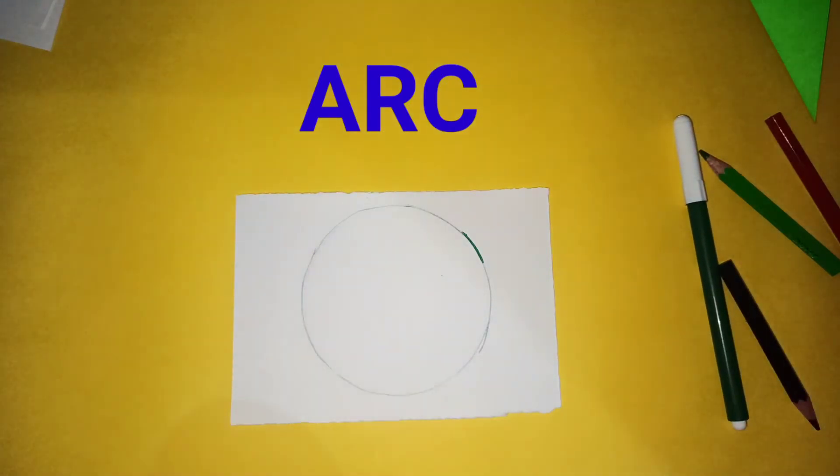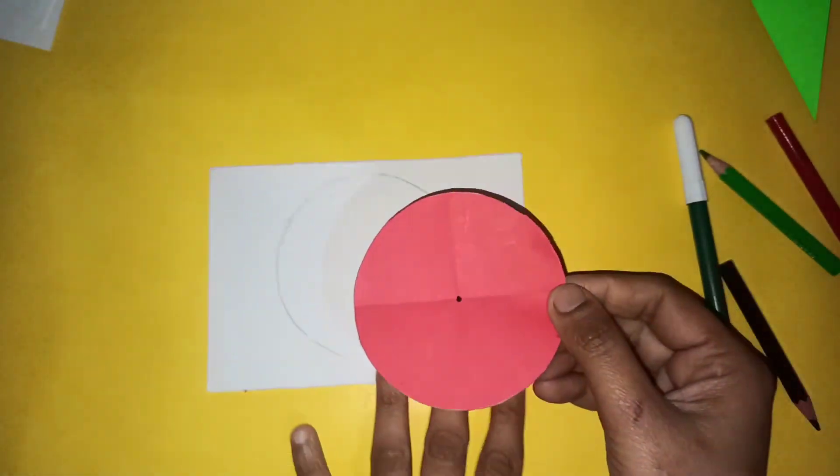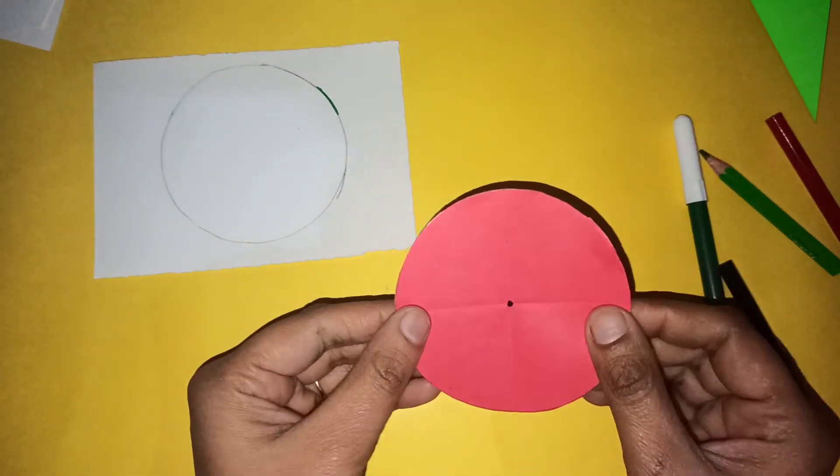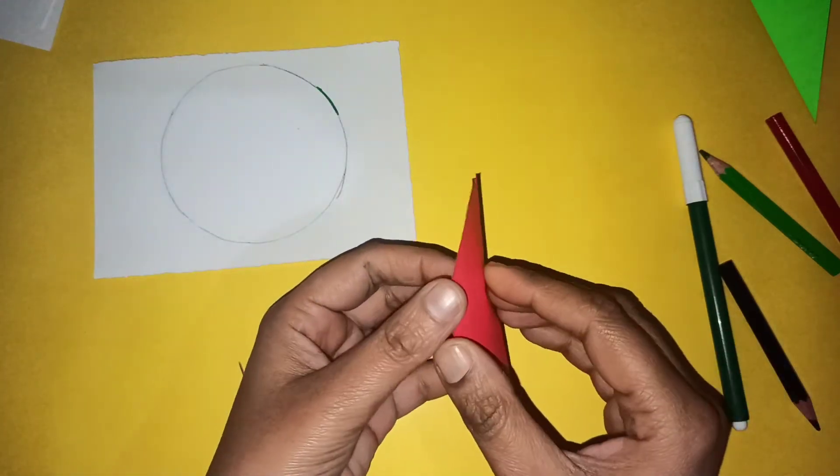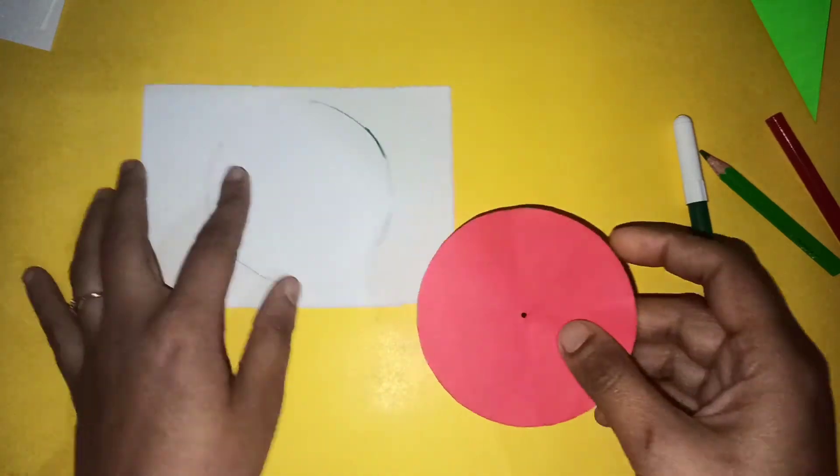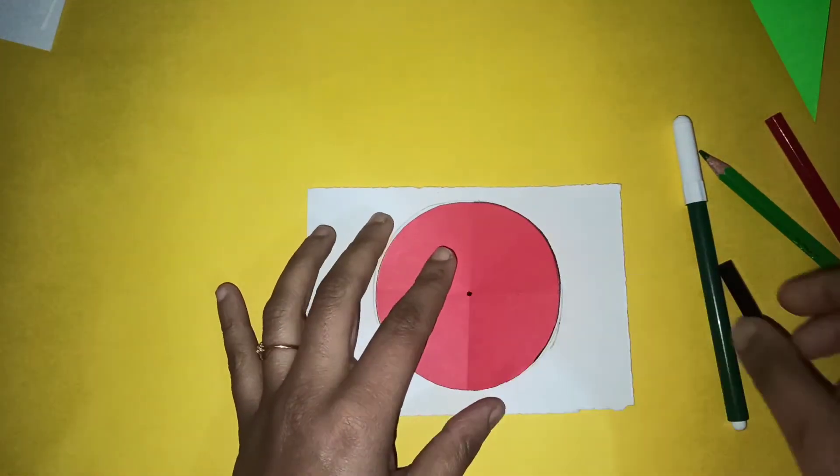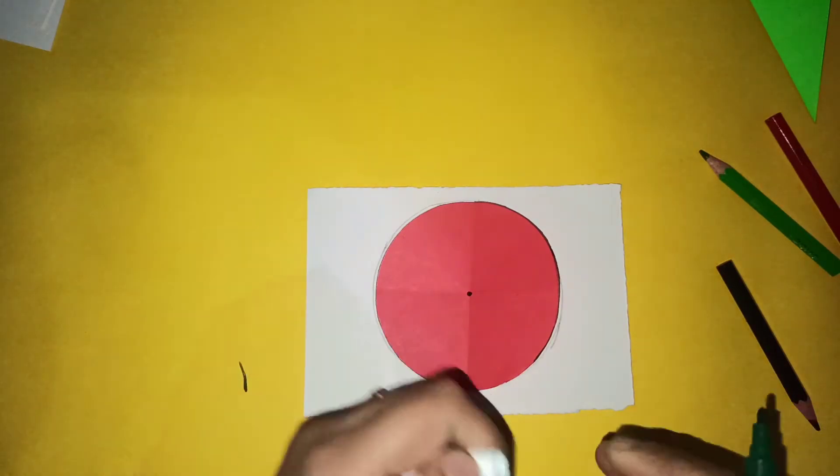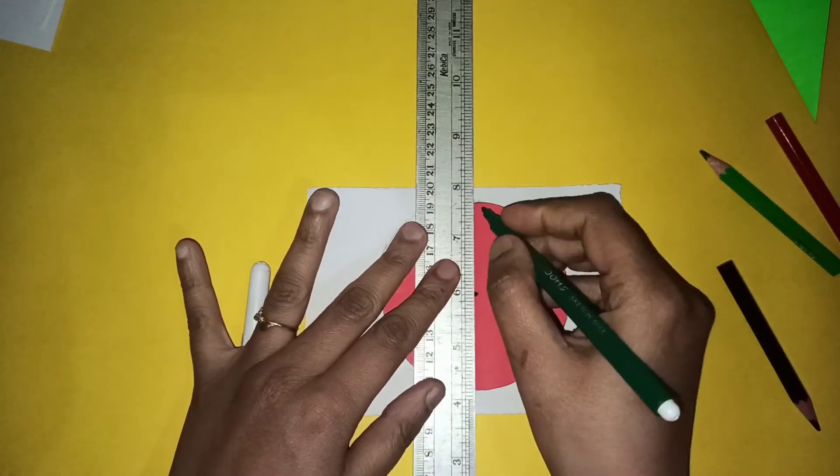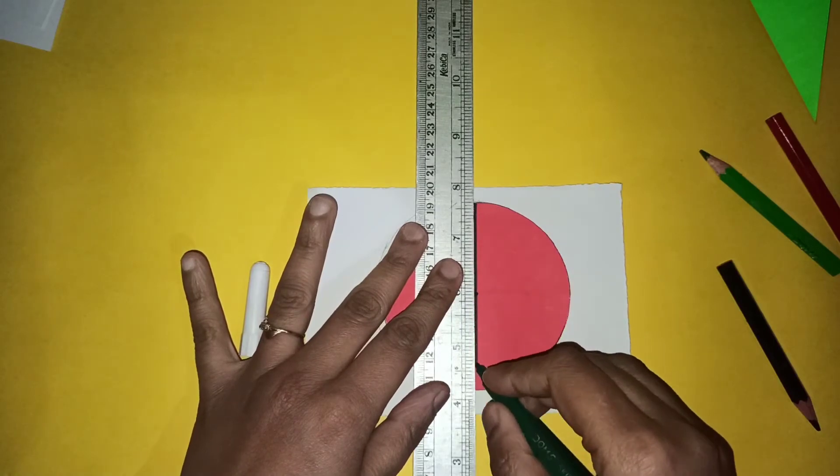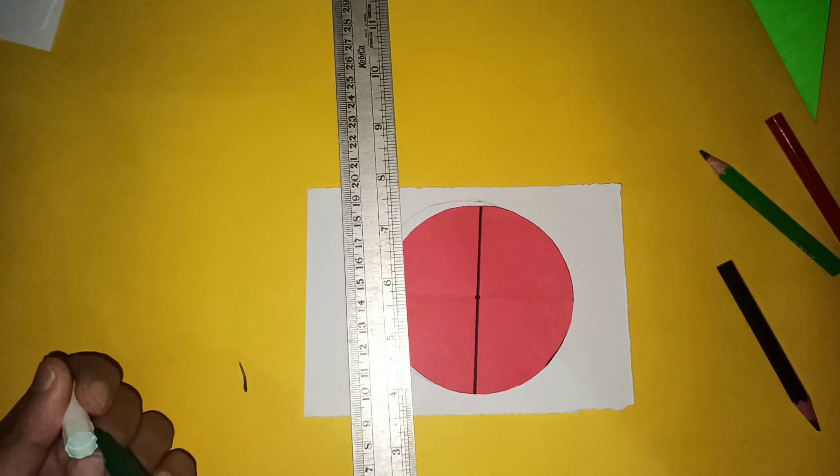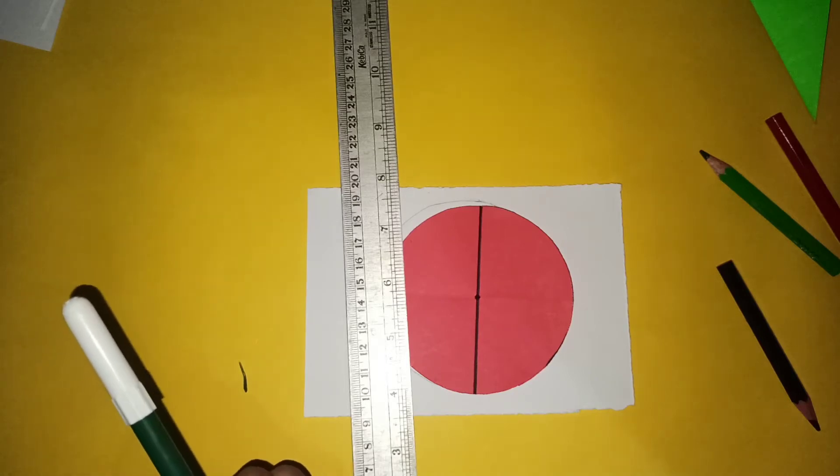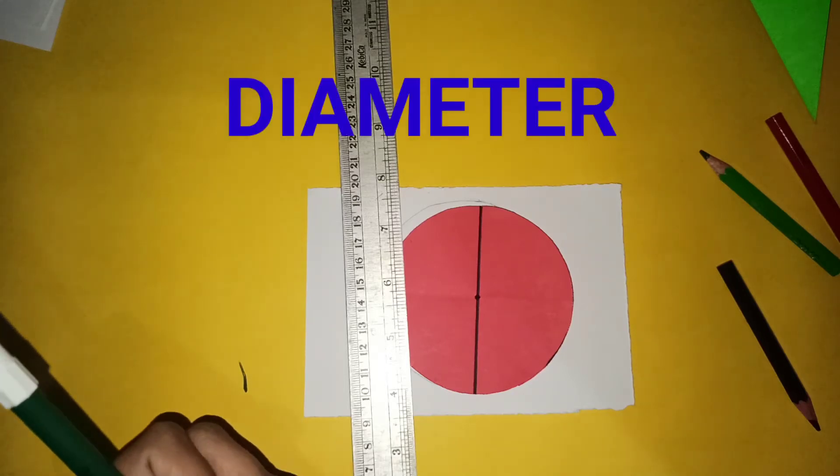Now let's talk about the other parts of the circle. In the beginning, I folded it like this and got a line along the fold. Let's draw this line. Do you know what is special about this line? It passes through the center of the circle and has a special name. It's called the diameter of the circle.